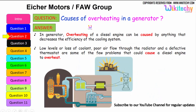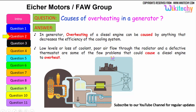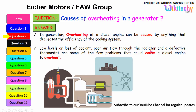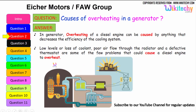Let's move on to the next question: causes of overheating in a generator. Overheating of a diesel engine can be caused by anything that decreases the efficiency of the cooling system. It can be due to the loss of coolant, low levels of coolant, poor air flow through the radiators, and a defective thermostat — which are some of the problems that could cause a diesel engine or a generator to overheat.